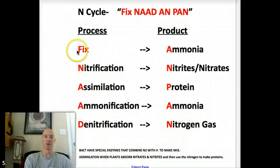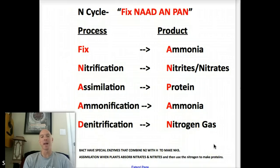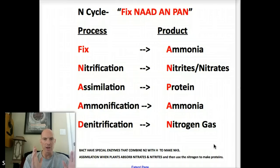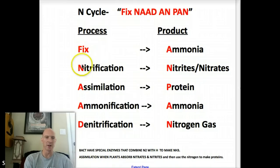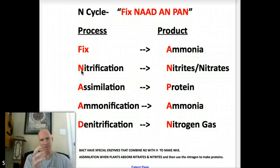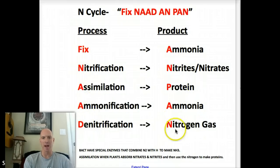The end product is nitrogen gas, and then it can start all over again. So Fix, NAD, and Pan — you can write it in the margin of your paper, or on an exam when you're like, how do I do that? Hopefully the first letter triggers the name of the process for you. But if you use it, you've got to make sure you line it up right or it won't work.